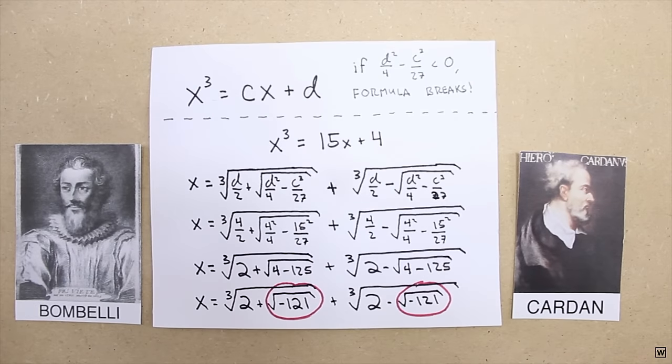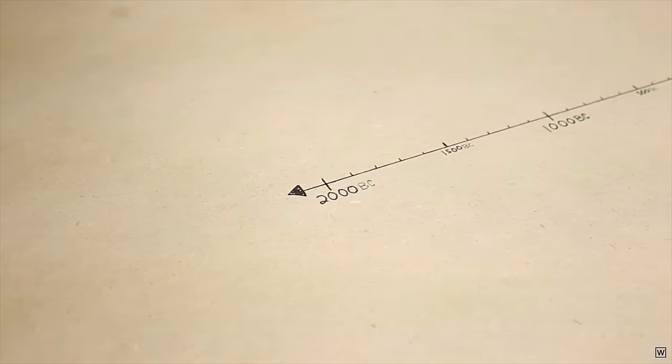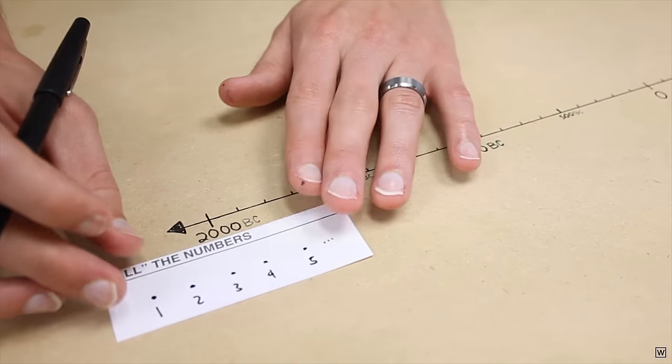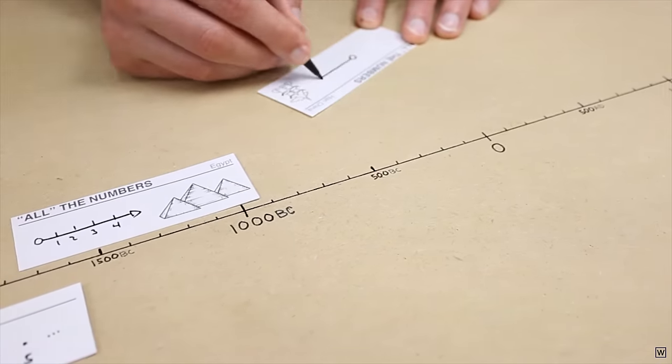Cardan and Bombelli were genuinely stuck on a tough problem that they knew had a solution. What Bombelli was able to see is that if he extended the existing number system, as had been done so many times before, he could solve the problem.